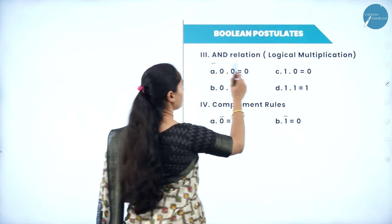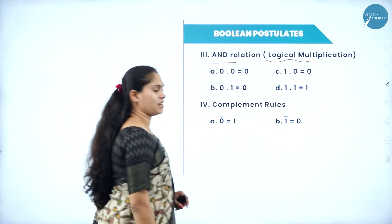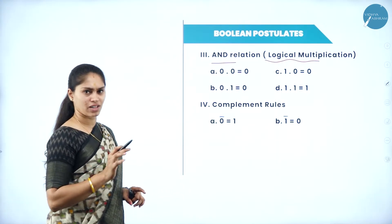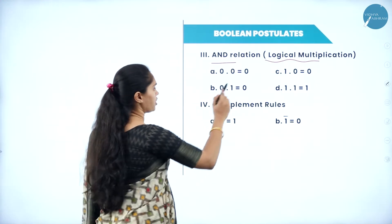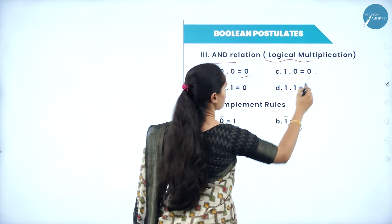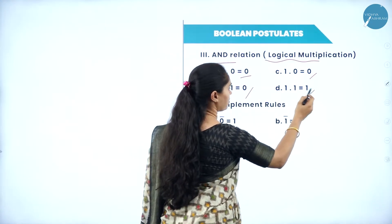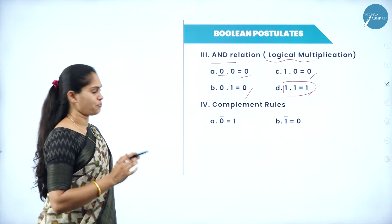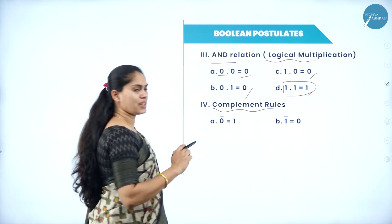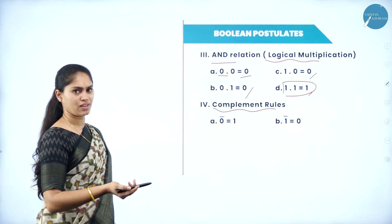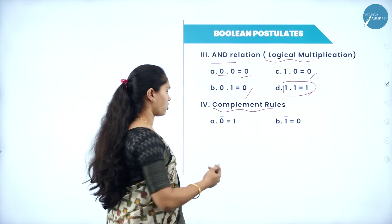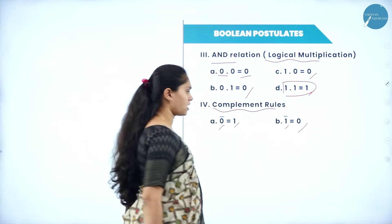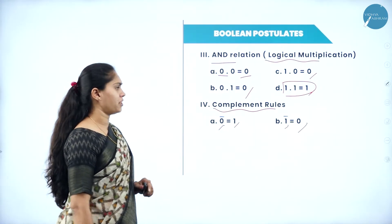For the AND relation, that is logical multiplication, we get 1 as a result only if both inputs are 1. So: 0 into 0 is 0, 1 into 0 is 0, 0 into 1 is 0, and 1 into 1 is 1 — this is the only combination that gives true. Then we have the complement rule: if the input is 0 the output will be 1, and if the input is 1 the output will be 0. So 0 complement is 1 and 1 complement is 0. This is the complementation rule regarding Boolean postulates.